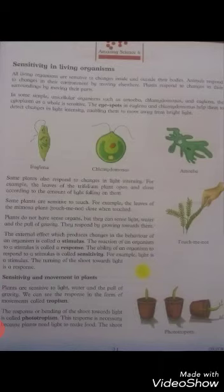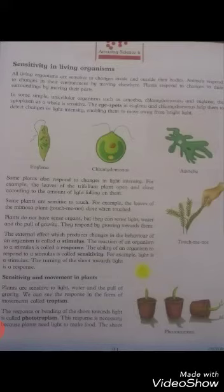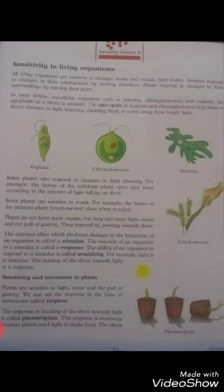Some plants also respond to changes in light intensity. Kuch paudhe bhi respond kertate hain changes karne meh light ki intensity ko. For example, the leaves of the trifolium plant open and close according to the amount of light falling on them. Jiasse ke pate trifolium plant khulte hain aur band hootet hain light ke amount ke mutabik.